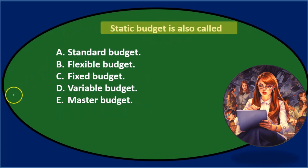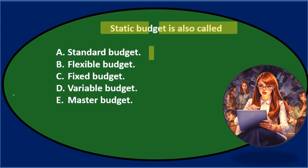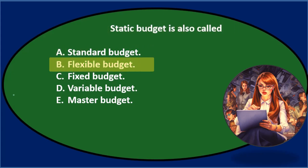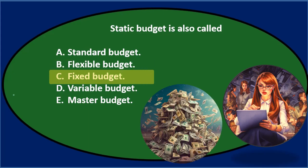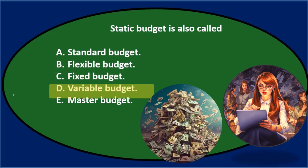Next question: Static budget is also called — A. Standard budget, B. Flexible budget, C. Fixed budget, D. Variable budget, or E. Master budget.